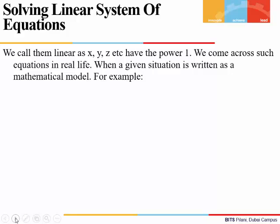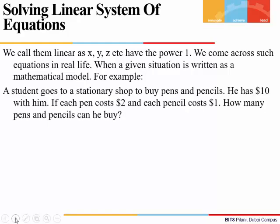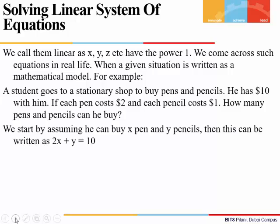In everyday life, we do come across many situations. If we write them as a mathematical model, we get a linear system. The simplest example is: let's say a student goes to a shop, he has $10 with him and he wants to buy pens and pencils. The shopkeeper tells him each pen costs $2 and each pencil costs $1. We will first assume that he buys x pens and y pencils, and then write it as 2x plus y equals 10, because the cost of all the pens would be 2x and the cost of pencils would be 1 times y, giving a total of $10.